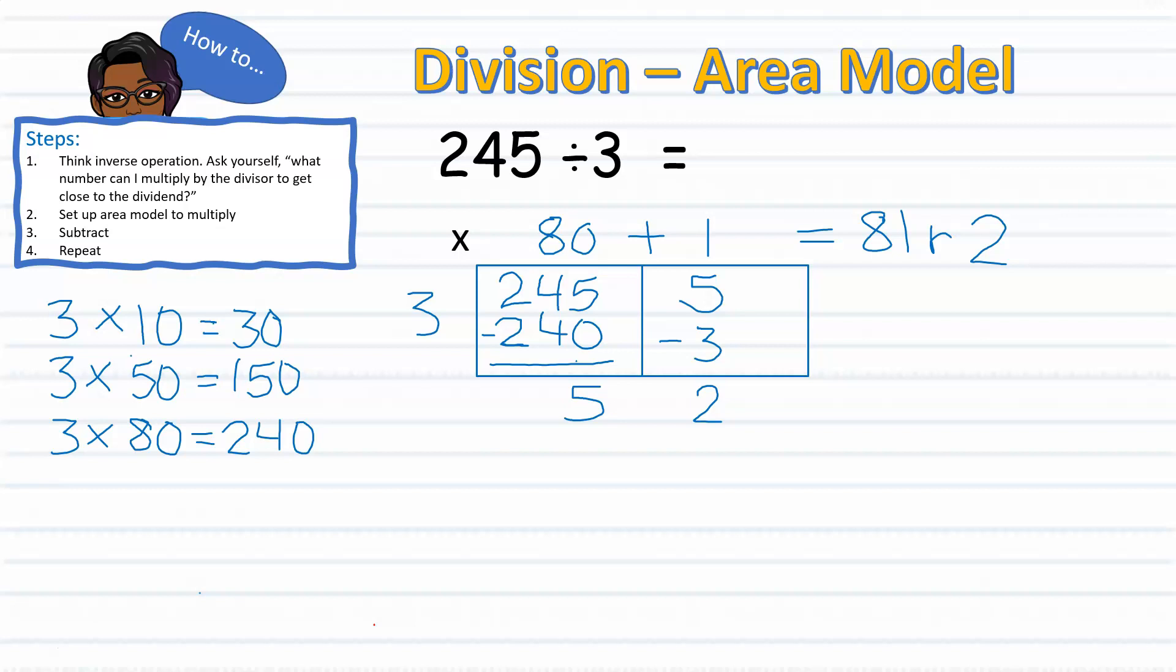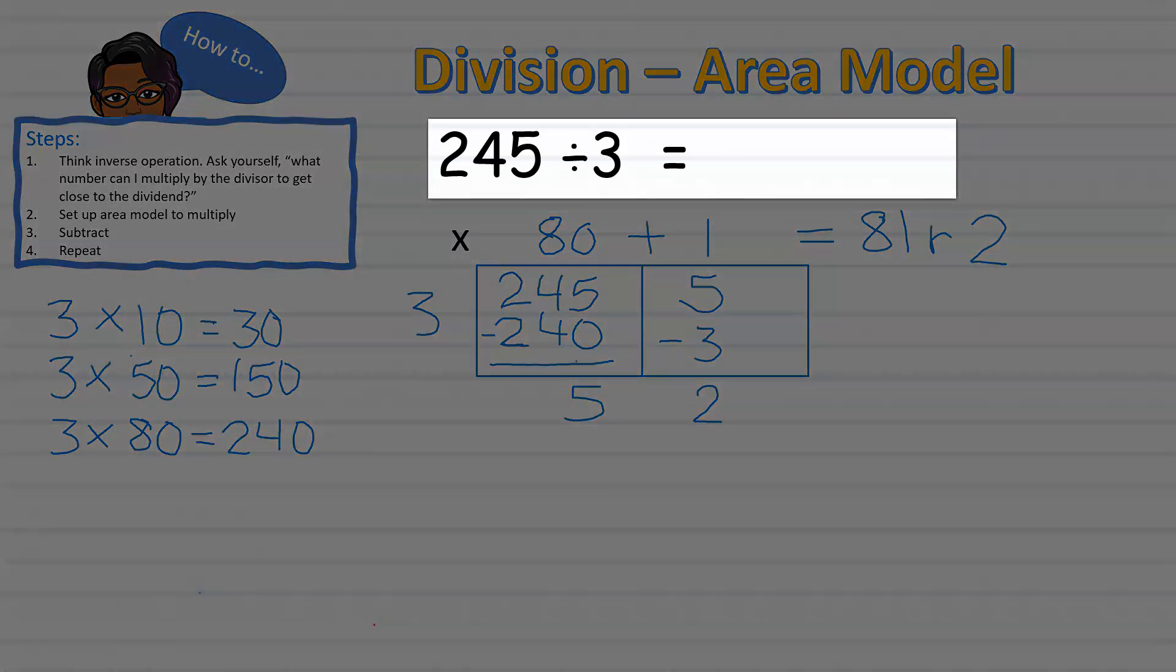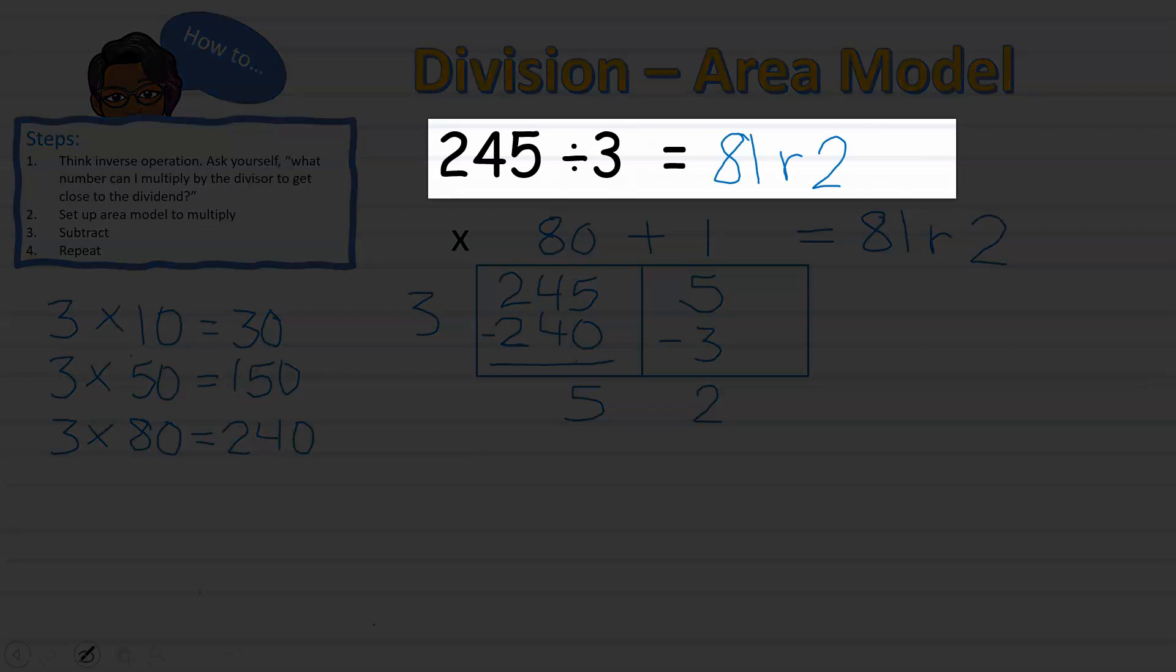Therefore, I know that 245 divided by 3 equals 81 with the remainder of 2.